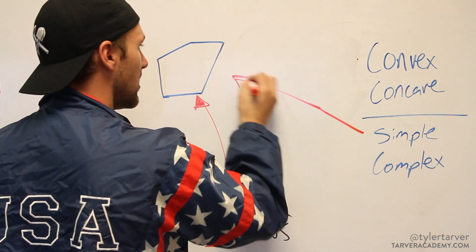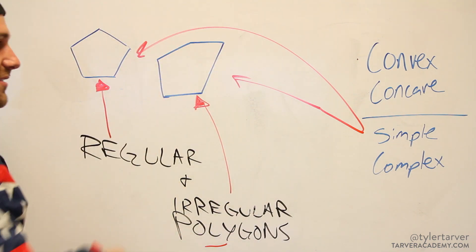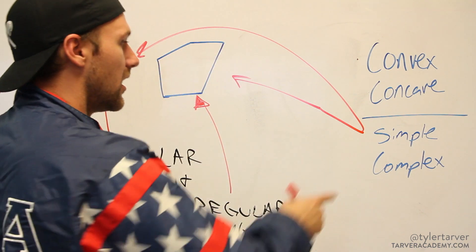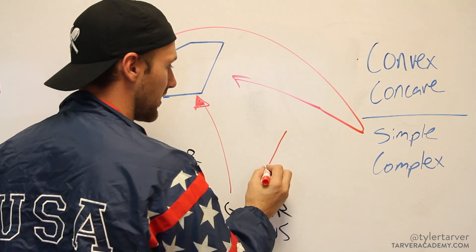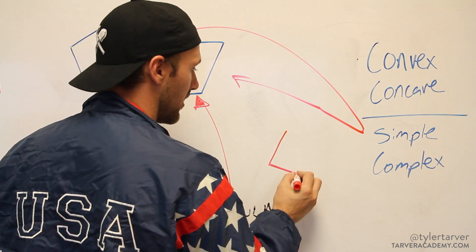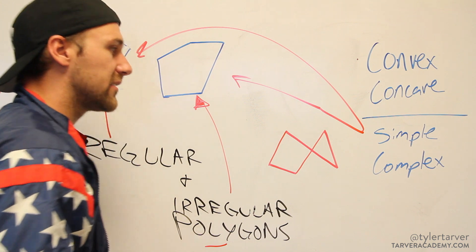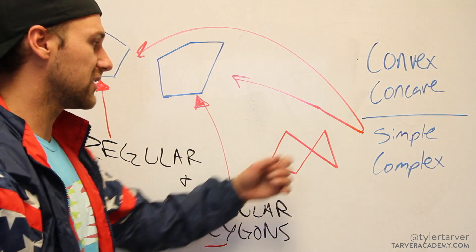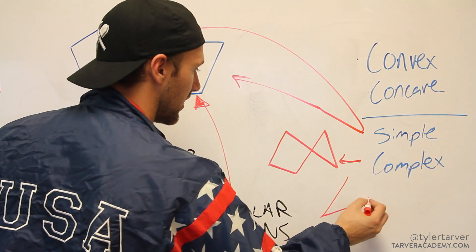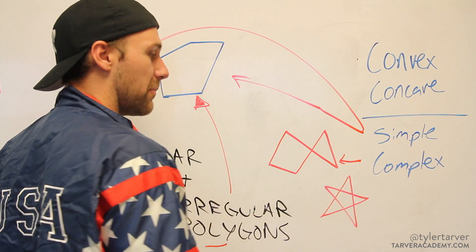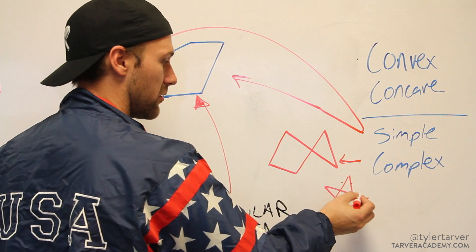For instance, these are simple polygons — they go around the outside and nothing overlaps anything else. Complex polygons, however, would be something like this. That's complex because it overlaps — this is a complex polygon.